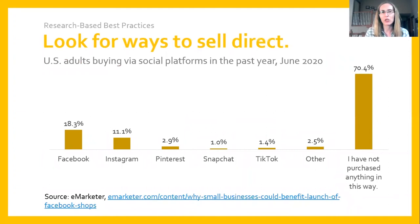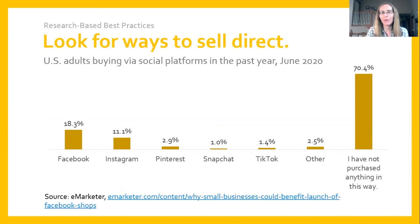The next research-based best practice is looking for ways to sell direct. E-Marketer conducted research in mid-2020 to find the extent to which U.S. adults purchased via social platforms in the preceding year. A majority of U.S. adults said they did not purchase via social, but 10% of U.S. adults said that they did purchase via Instagram. This is a real opportunity for future growth, particularly as features like shopping tags arise, giving you the ability to facilitate direct on-platform sales.